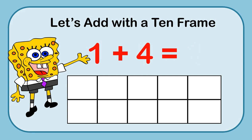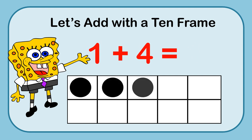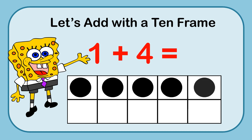The equation 1 plus 4. Let's put one marker and then 4 more. And count them all up: 1, 2, 3, 4, 5. 1 plus 4 equals 5.